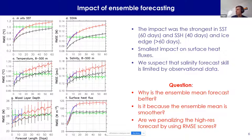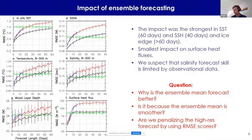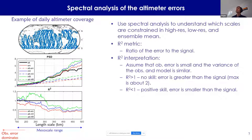The next question is: why is ensemble mean forecast better? Is it because the ensemble mean is smoother, and are we penalizing the high-res forecast by using RMSE scores? Much of this work has been done in atmospheric weather forecasting, so it's not new, but all of it was new to the ocean domain — that's the novelty. We'll explore this using along-track SSH altimetry, visible in these SSH track pictures.